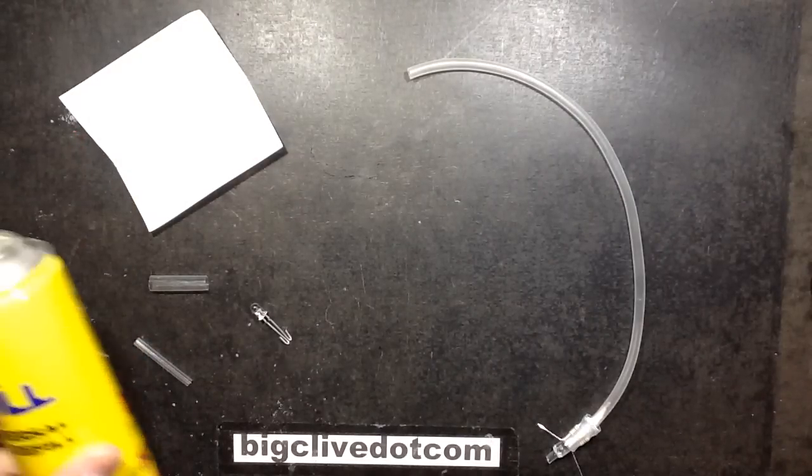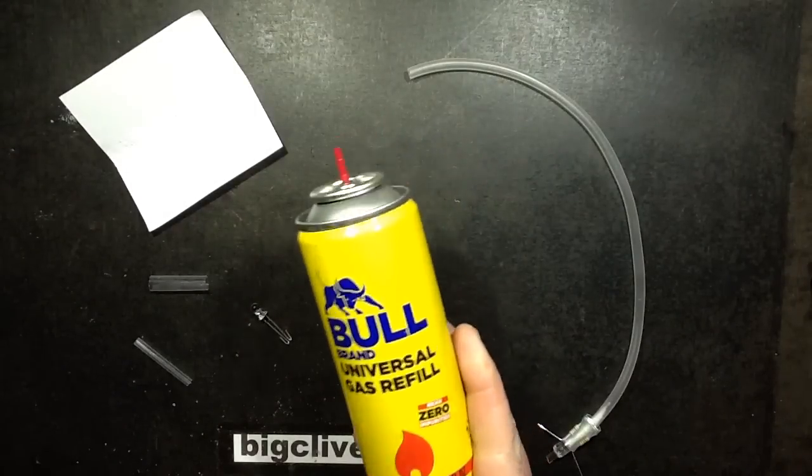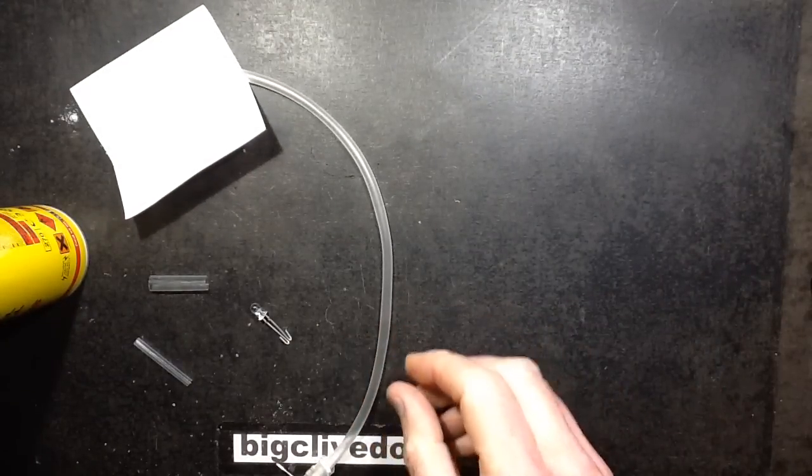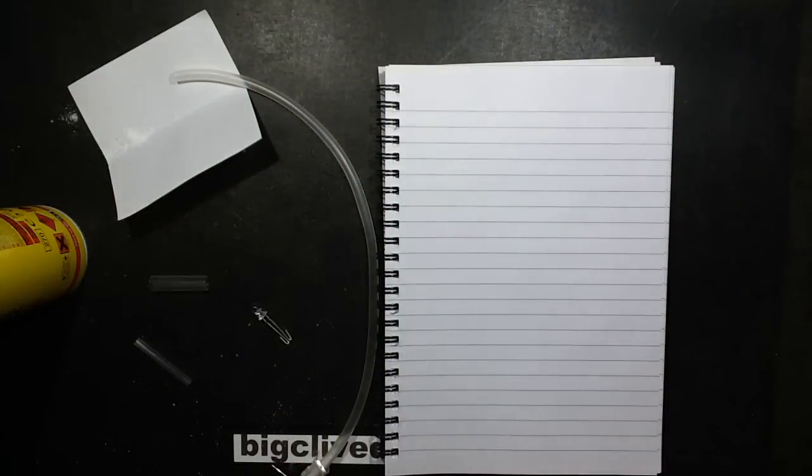So what I'm going to be doing here is using this butane lighter fuel to fill this bit of silicon tubing. And I'm going to try and make a flexible bubble tube. It might work, it might not work, but here's the plan.